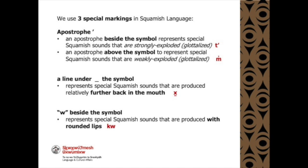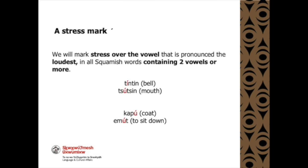A W beside the symbol represents special Squamish sounds with rounded lips. A stress mark is placed over the vowel that is pronounced the loudest in all Squamish words containing two vowels or more.